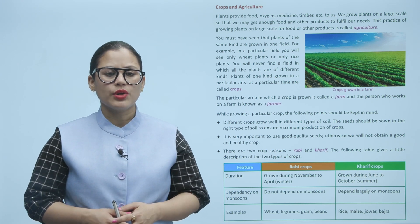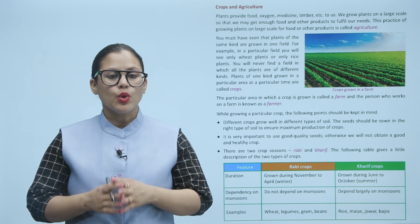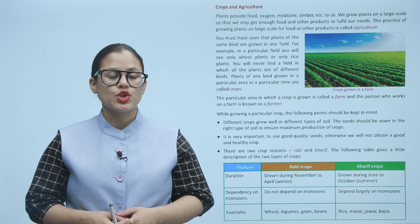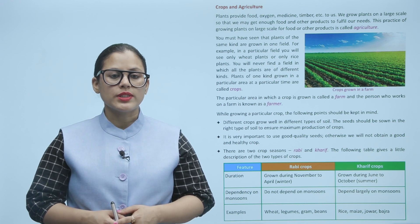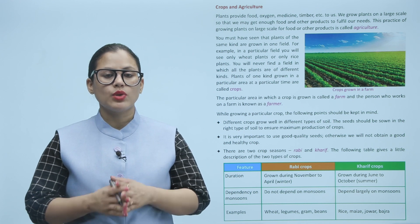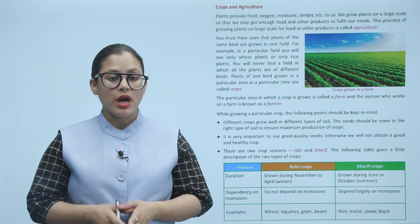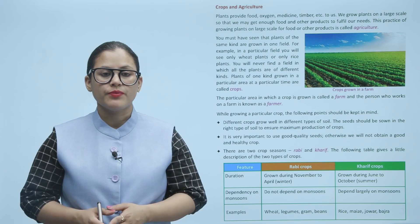While growing a particular crop, the following points should be kept in mind: Different crops grow well in different types of soil. The seeds should be sown in the right type of soil to ensure maximum production of crops. It is very important to use good quality seeds, otherwise we will not obtain a good and healthy crop.